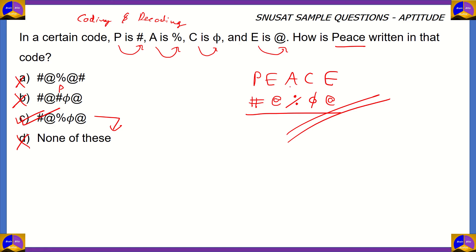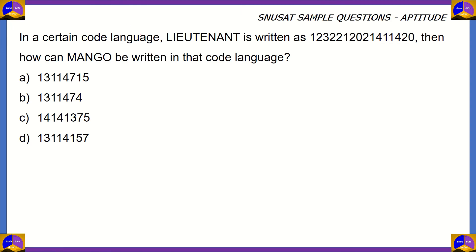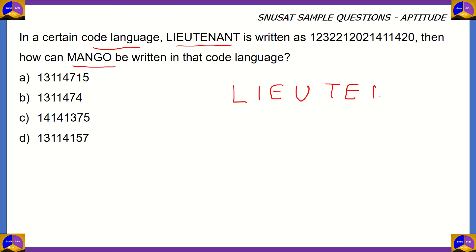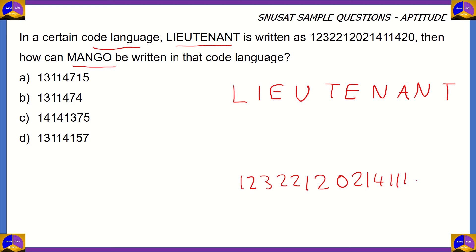Having understood that, let's move on to the next question. In a certain code language, LIEUTENANT is written as 123-221-202-141-1420. We need to find out how MANGO can be written in that code language. When you have a word and its code given, it's a good idea to write it all in caps — LIEUTENANT — and then align it with the number 123-221-202-141-1420.